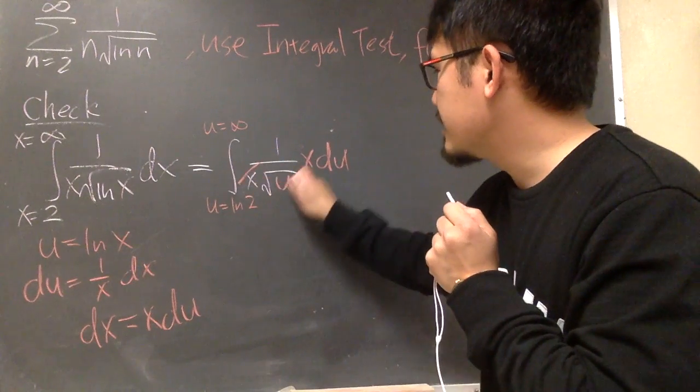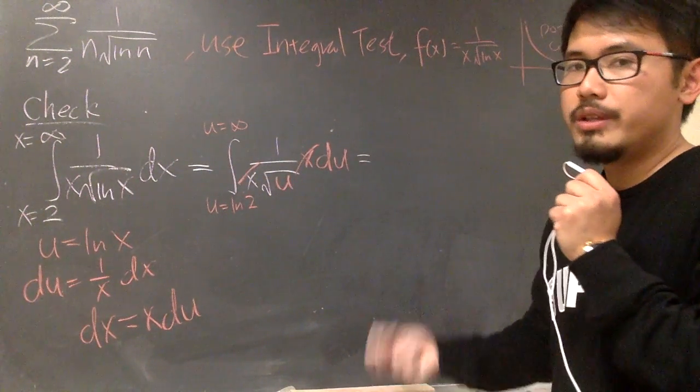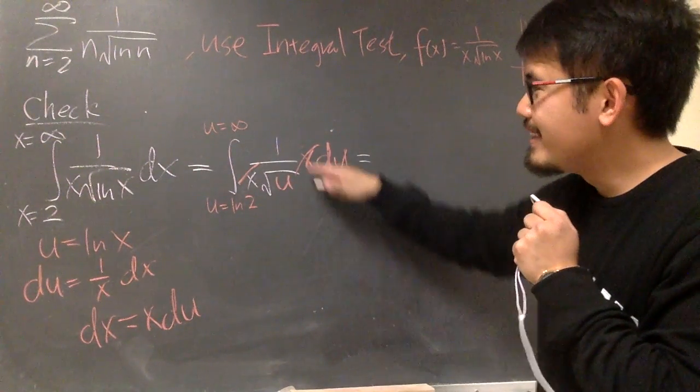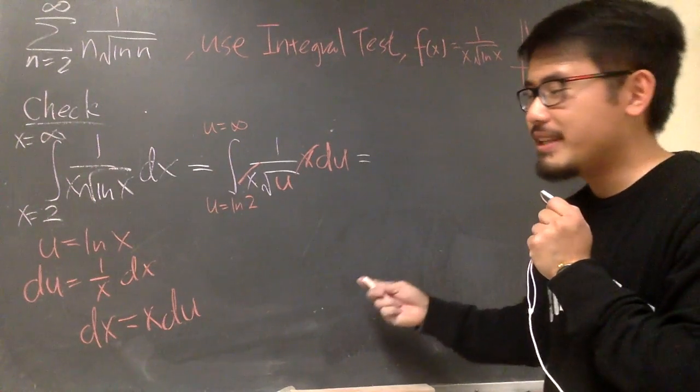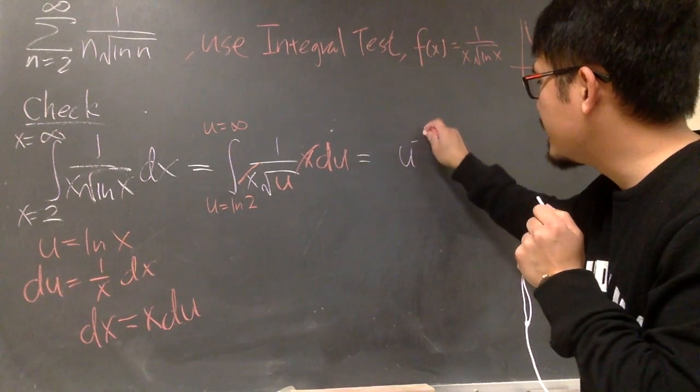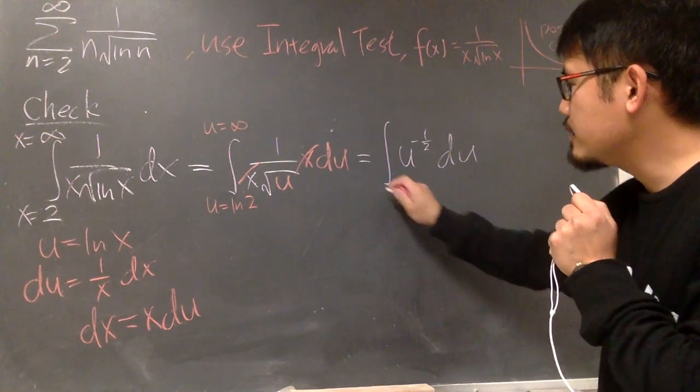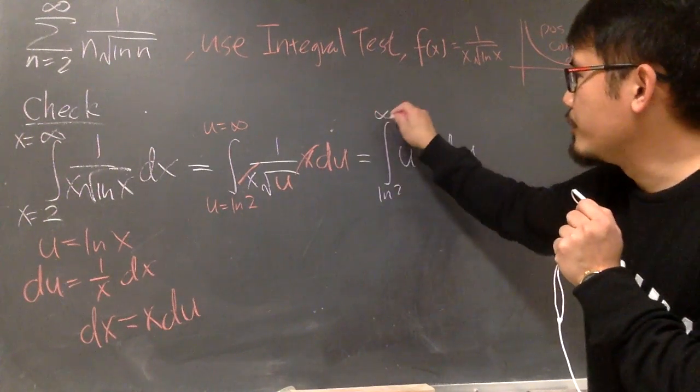As we can see, this x and that x will cancel each other out. So now we can focus on doing the integration. And to do so, actually, I have to take one more step. 1 over square root of u, we are going to write it down as u to the negative 1/2 power first. And then we haven't done any integration yet, so we have to put this down. And then this is the u values, ln 2 to infinity.